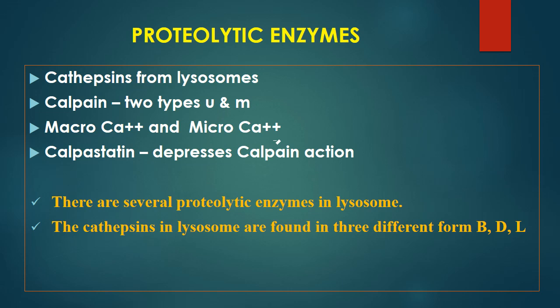The proteolytic enzymes playing a major role in desirable changes during aging are: cathepsins from lysosomes — cathepsin B, cathepsin D, and cathepsin L — which act on different sites on proteins; calpains, the calcium-activated sarcoplasmic factor, which exist in two varieties — microcalpains and macrocalpains; calcium ion factors — macro and micro calcium factors; and calpastatin, which acts against calpains and depresses their action. These are the important proteolytic enzymes that bring about desirable structural changes during aging.